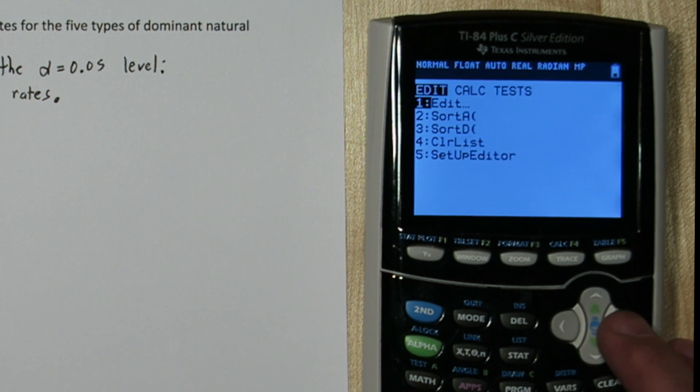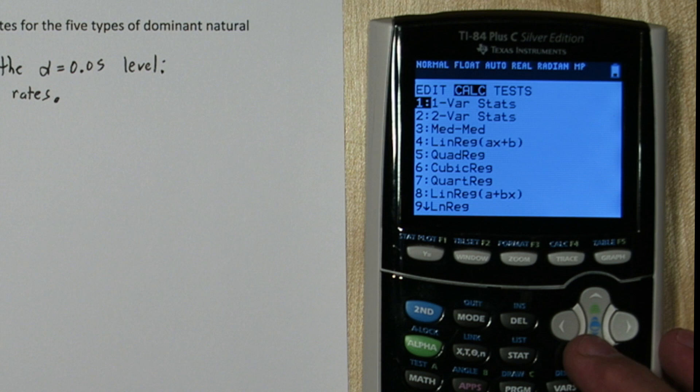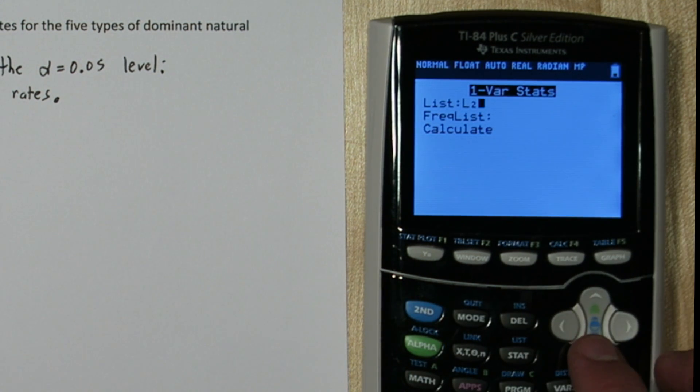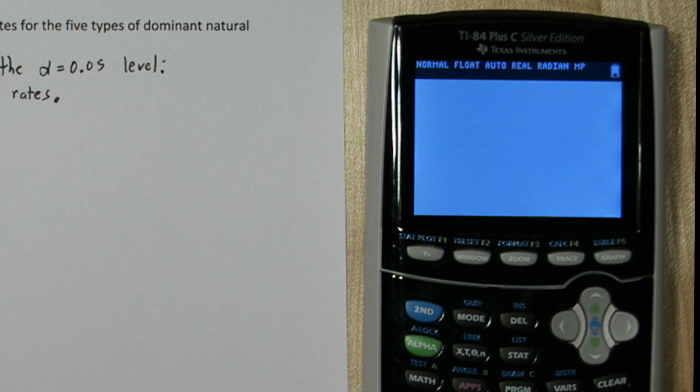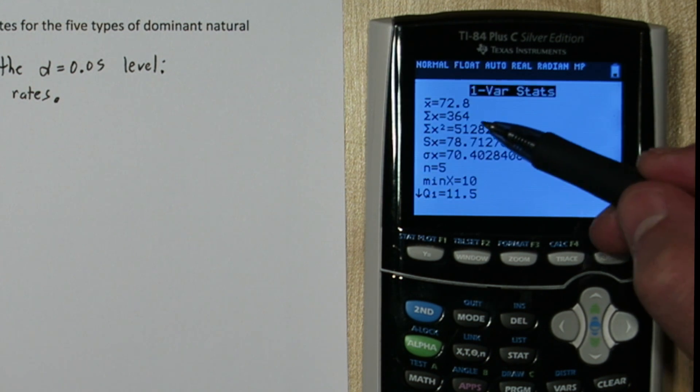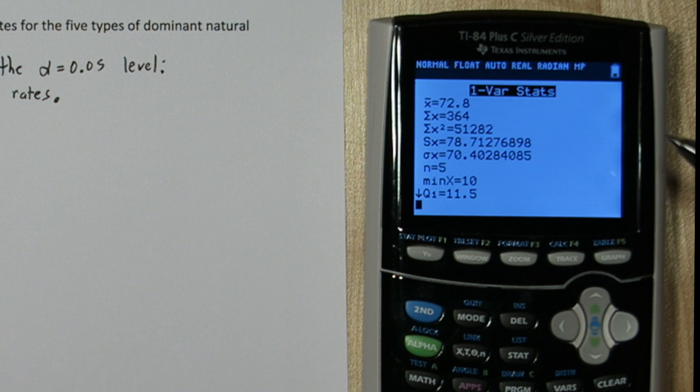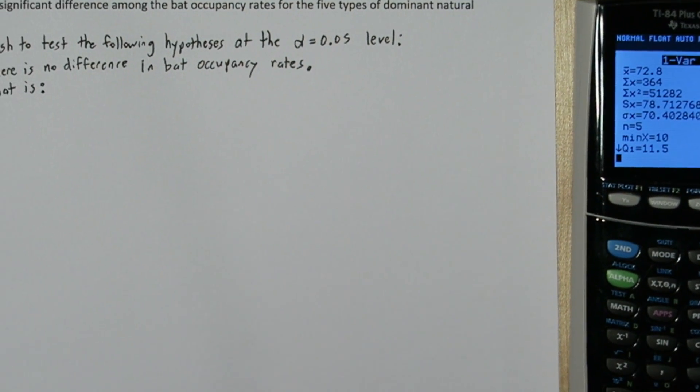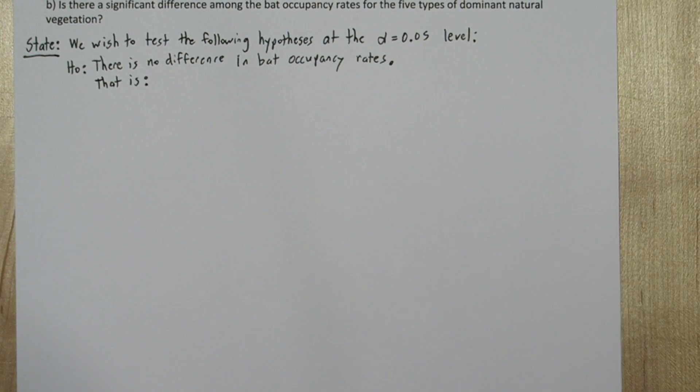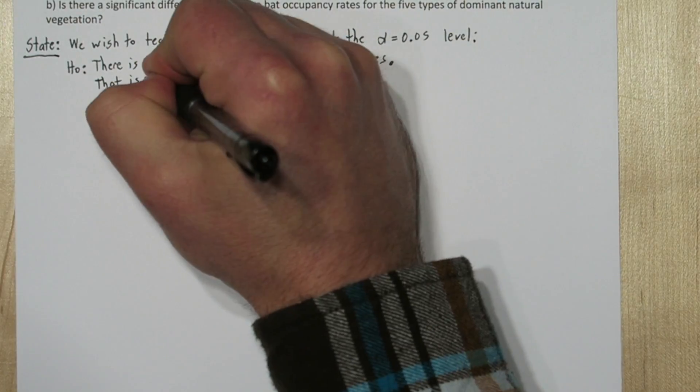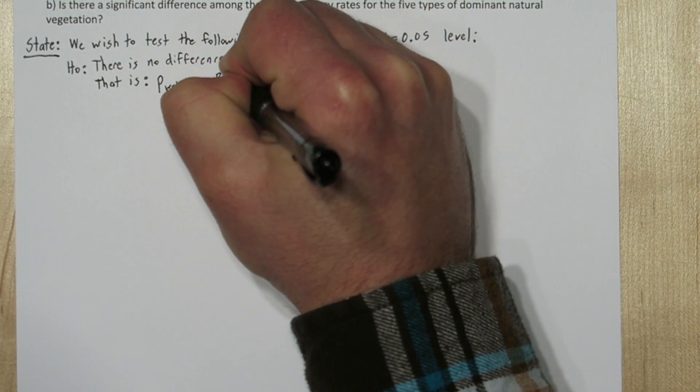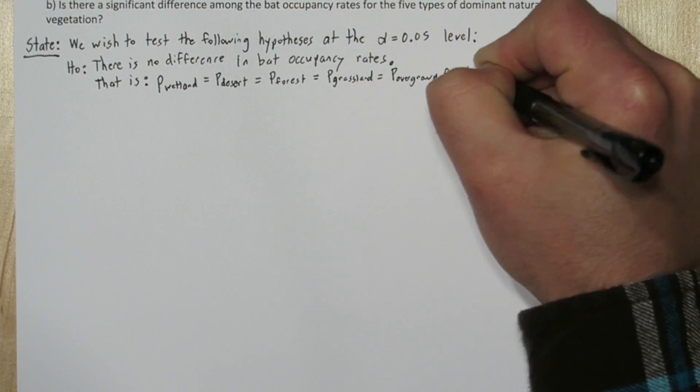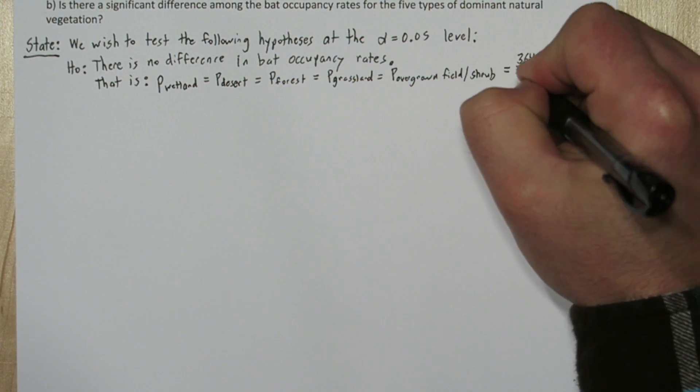I'm going to press the STAT button and go to CALCULATE. I'm going to calculate 1VAR statistics for list 2. Now this is the number I'm interested in, 364. In the stem of the problem, they said there was a total of 688 bat houses. So if there is no difference in the bat occupancy rates, then the true occupancy rate for each of these dominant natural vegetations is going to equal this average, 0.558.